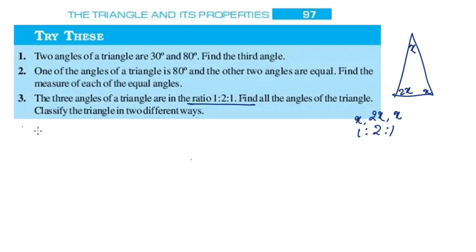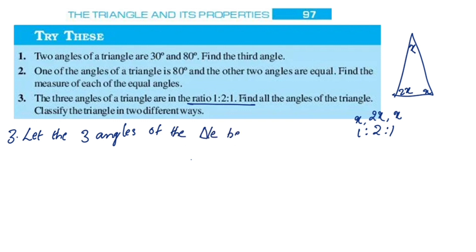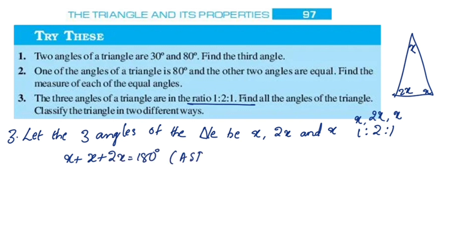Let the three angles of the triangle be x, 2x, and x. Applying the angle sum property: x plus 2x plus x equals 180 degrees. x plus x is 2x, and 2x plus 2x is 4x. So 4x is equal to 180 degrees.